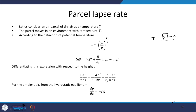We have defined the potential temperature to be that particular temperature which an air parcel will eventually reach if it is compressed or expanded to reach the sea surface or the standard pressure. We can define the potential temperature with respect to the temperature of the air parcel T prime as: theta equals T prime times P naught by P, raised to the power R by Cp.